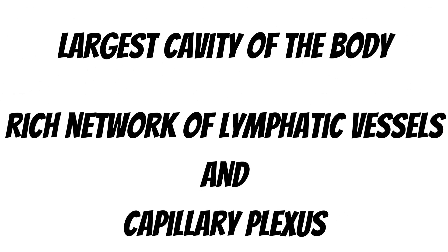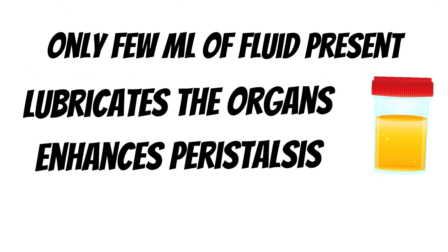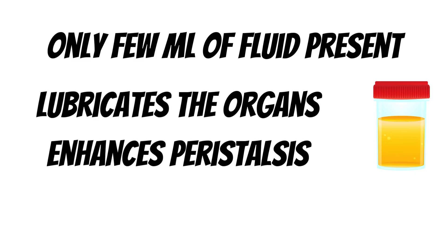The peritoneal cavity is the largest cavity of the body and it has a rich network of lymphatic vessels and capillary plexus. Normally only a few milliliters of fluid is present in the peritoneal cavity, which is usually a straw-colored fluid. It helps in lubricating the organs and also enhances peristalsis, which is the normal physiological movement of the intestines.